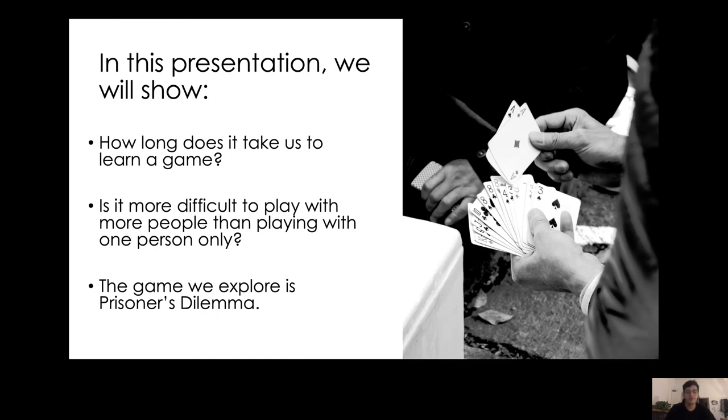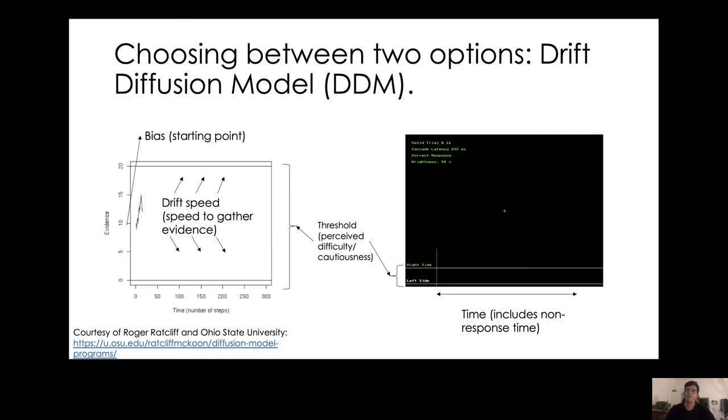The game we're exploring is the Prisoner's Dilemma, and we use the Drift Diffusion Model to measure how difficult it's perceived.